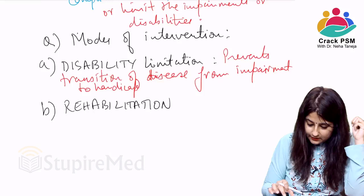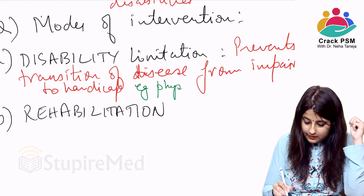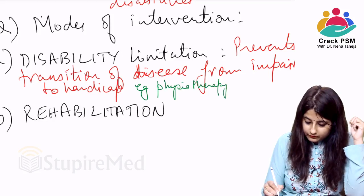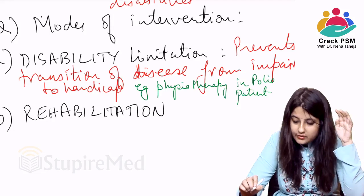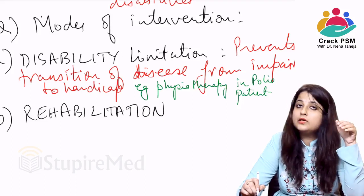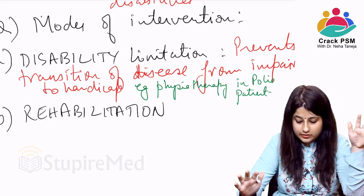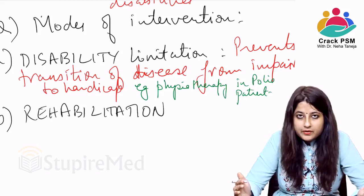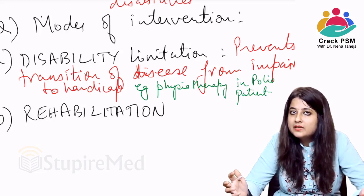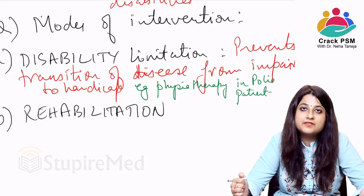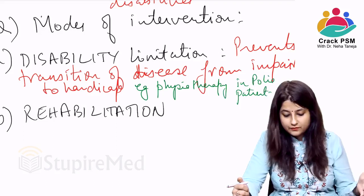An example of disability limitation: providing physiotherapy to a polio patient. A person who suffers from polio is impaired — they have lost the function of their foot. We want to prevent this person from progressing from impairment to handicap by limiting disability through physiotherapy, which prevents further weakening of muscles.